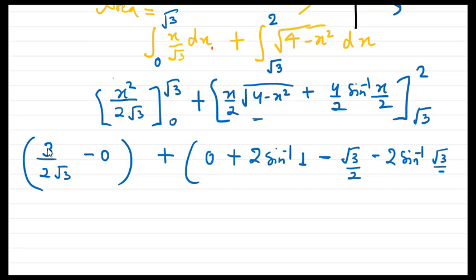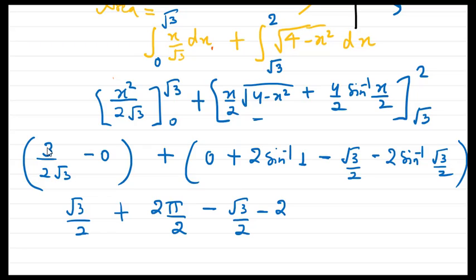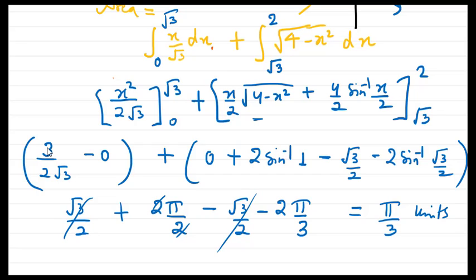Substituting the lower limit gives −(√3/2)·√(4 − 3) − 2·sin⁻¹(√3/2), which is −√3/2 − 2·(π/3). Combining everything: √3/2 + 2·(π/2) − √3/2 − 2·(π/3). The √3/2 terms cancel, and we get π − 2π/3 = π/3. So the final answer is π/3 square units.